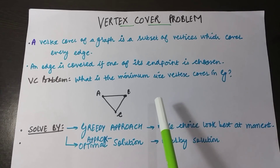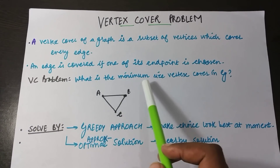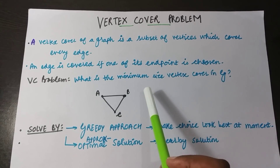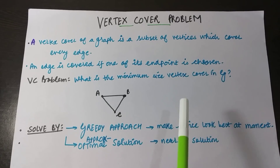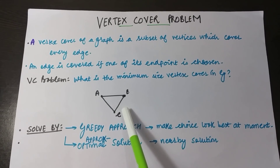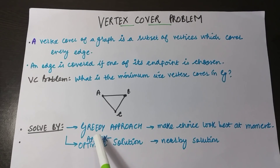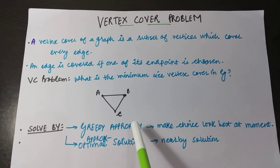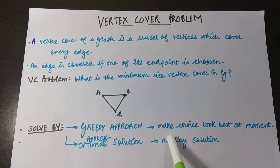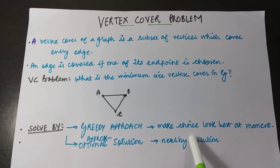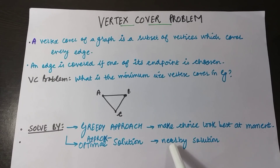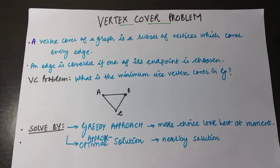The problem asks: what is the minimum size vertex cover in a graph? We have to find the minimum set of vertices such that by choosing that minimum set we can cover all the edges of the graph. This problem is solved by two approaches: the greedy approach, which makes choices that look best at the moment, and the approximate optimal solution, which doesn't always give an exact solution but always gives a nearby solution.